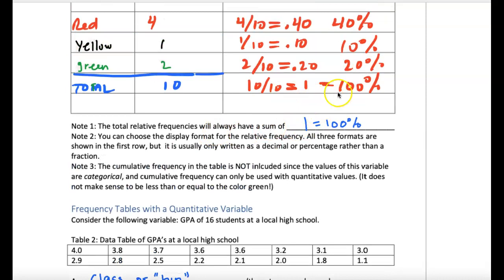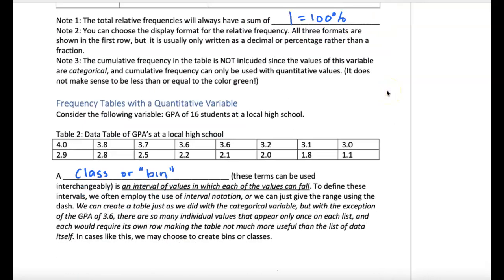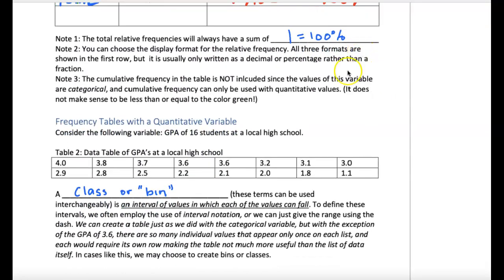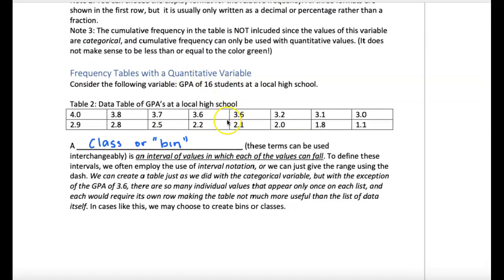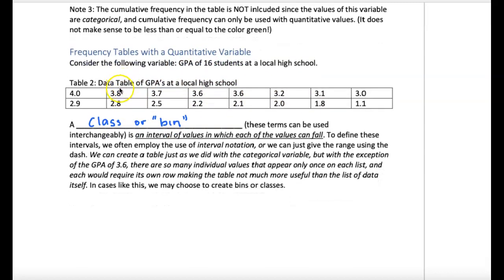There's not a cumulative frequency here - we'll take a look at one of those, but it's not there right now. Here's another form of a frequency table for a quantitative variable. Again, not a scientific survey or study, but just a simple example where you collect data - let's say you have 16 students, get their GPAs. Here's the raw data as it's displayed.